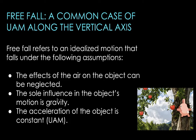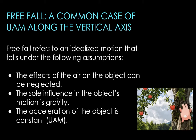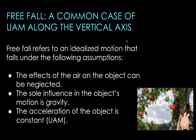The car example earlier shows a horizontal example of UAM, but UAM can also happen along the vertical axis with different possible scenarios — for example, a rocket ship being launched could be in UAM along the vertical. But a common case of UAM along the vertical axis that we're going to focus on is the state of freely falling bodies, or what we call a free fall state.